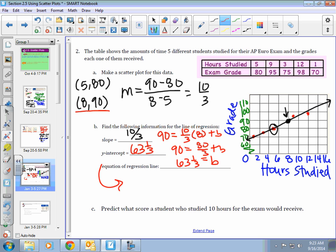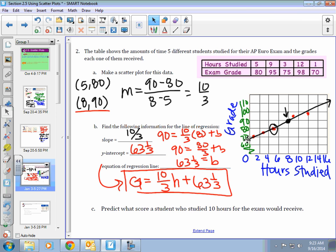The equation of my line of regression, we just put it all together. The grade is equal to my slope 10 over 3 times the hour studied plus my y-intercept, 63 and 1 third. There is my equation of the regression line. I just picked two points. Once again, if you pick two different points, you're going to get a little bit different line than me. Is that okay? Yes.